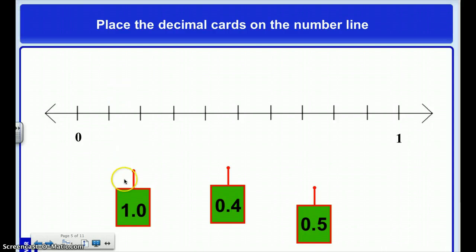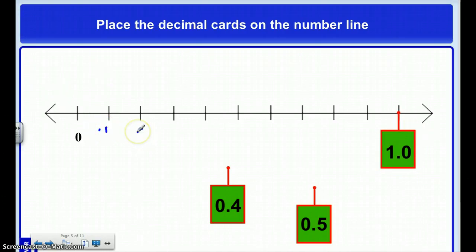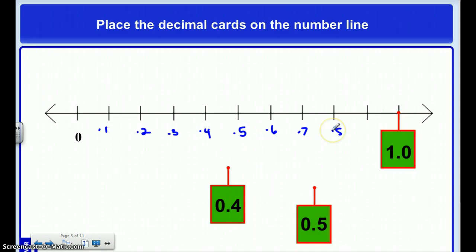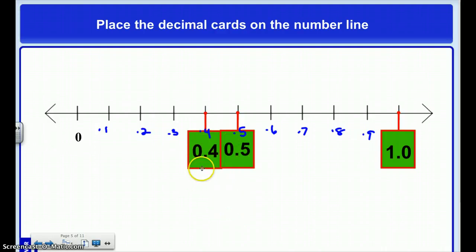Okay, now I've got this — this is one whole. So I'm going to put this right over here, label my number line again, and then place my numbers where they belong on the number line: 4 tenths and 5 tenths.